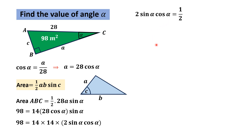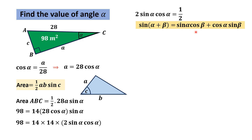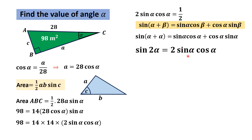Now we use the famous trigonometric identity involving the sum of angles: sine(alpha + beta) equals sine(alpha)cos(beta) plus cos(alpha)sine(beta). If we replace beta by alpha, this becomes sine(2alpha) equals 2 sine(alpha)cos(alpha). Substituting the value of 2 sine(alpha)cos(alpha) as sine(2alpha) into our equation, we get sine(2alpha) equals one-half.